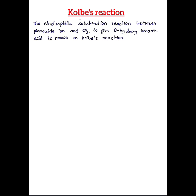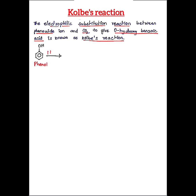Now let us understand the definition. The electrophilic substitution reaction between phenoxide ion and carbon dioxide to give orthohydroxybenzoic acid is called the Kolbe-Schmitt reaction. Phenoxide ion is obtained from phenol — if we treat a phenol molecule with NaOH, the product obtained is sodium phenoxide ion.